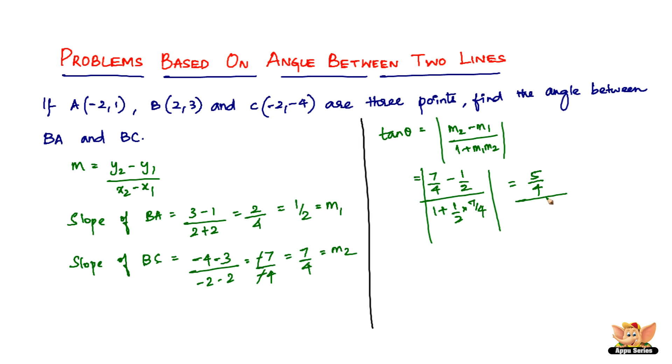So 1 plus 7 by 8 will be 15 by 8 which leads us to 5 by 4 times 8 by 15. Fraction divided by a fraction will be fraction times the reciprocal of the other fraction. So 4 goes 2 times in 8 and 5 goes 3 times in 15. Then we have 2 by 3. Therefore, tan theta is 2 by 3. So theta will be equal to tan inverse of 2 by 3.